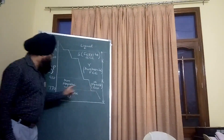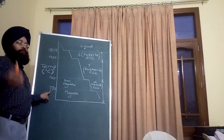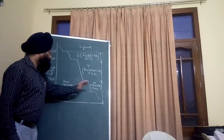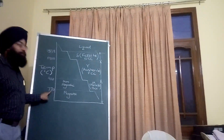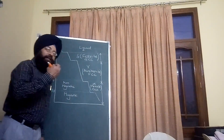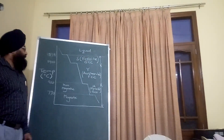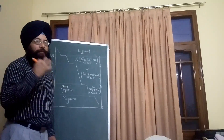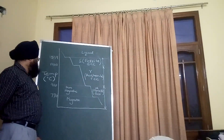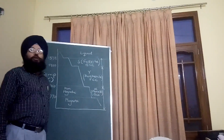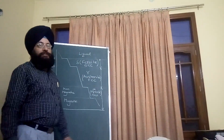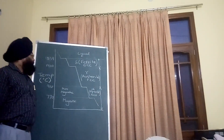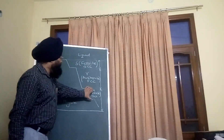Once the temperature is cooled below approximately 768 degrees centigrade — which varies slightly by source, sometimes listed as 760 or 770 degrees centigrade — the iron becomes ferromagnetic, meaning it acquires strong magnetic properties. This temperature is also known as the Curie temperature.